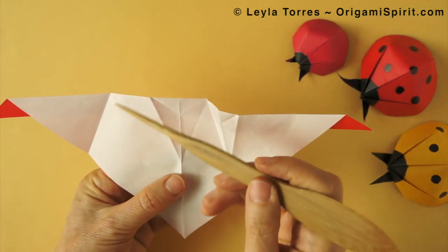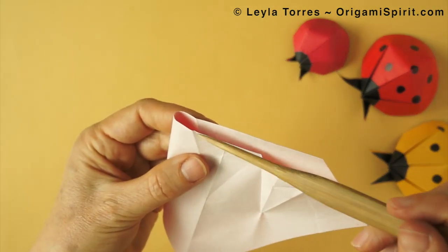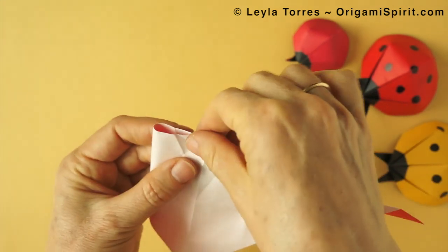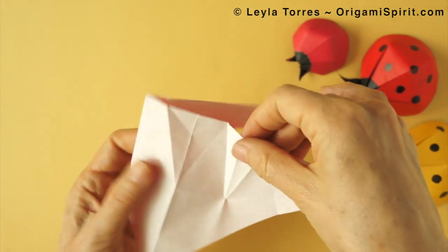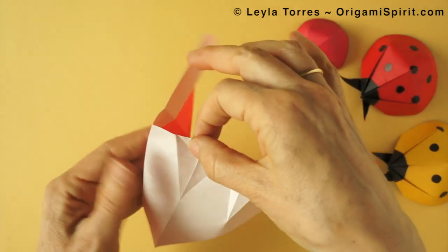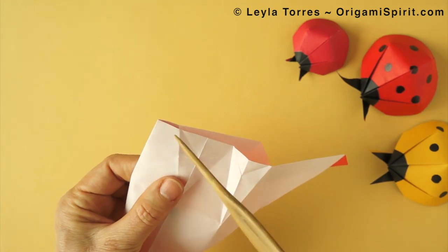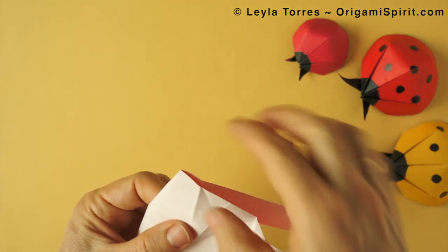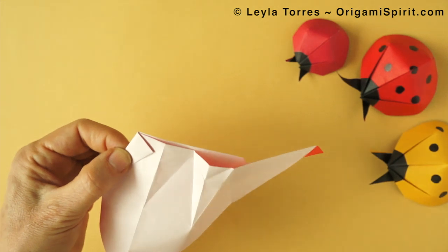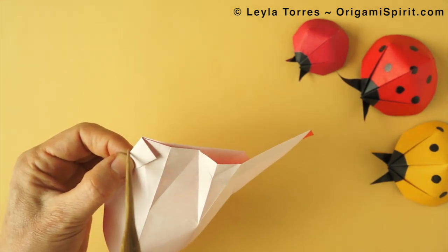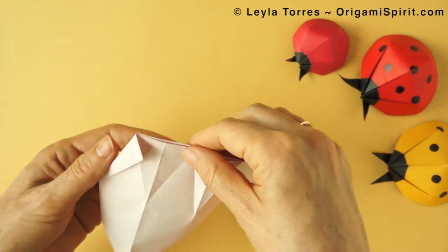We repeat the process here. Vertical. These two points coincide. Mountain. And then we fold from this point, the pinch mark, to this point. This short edge to match this outer edge. And fold.